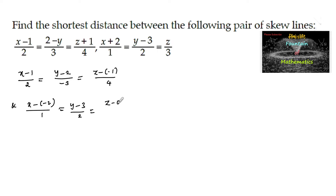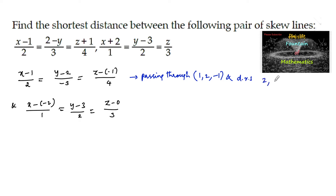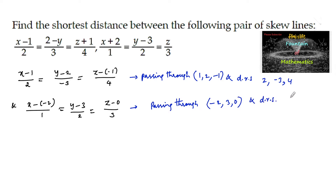Clearly we can say that the first line is passing through the point (1, 2, −1) and having the direction ratios, i.e., parallel vector (2, −3, 4). The second line is passing through the point (−2, 3, 0) and having the direction ratios (1, 2, 3). Let us write the line equations in vector form.